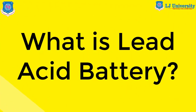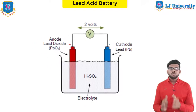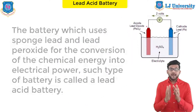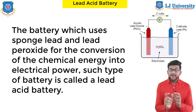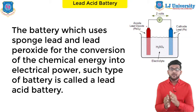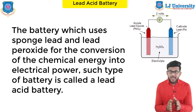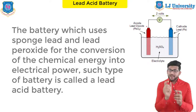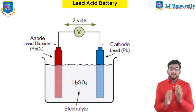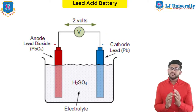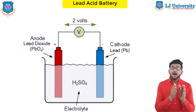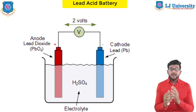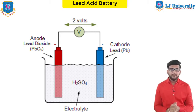What is a lead acid battery? Let's see the definition first, and thereafter I will explain in detail. The battery which uses sponge lead and lead peroxide for the conversion of chemical energy into electrical energy is called a lead acid battery. The lead acid battery is most commonly used in power stations and substations because it has higher cell voltages and the cost is very low compared to other batteries.